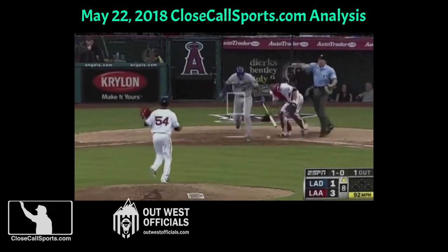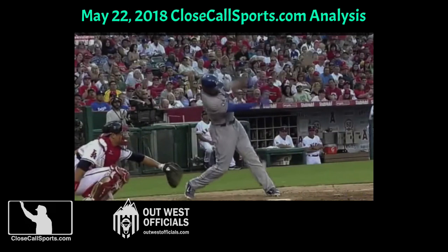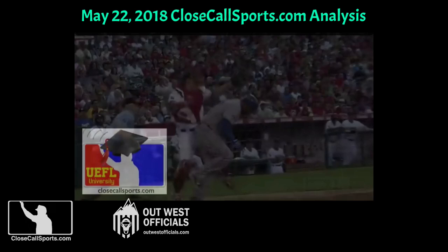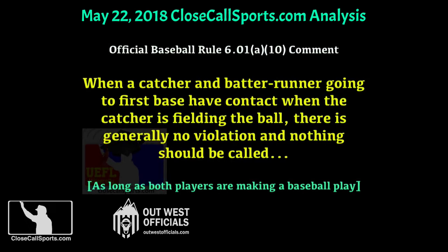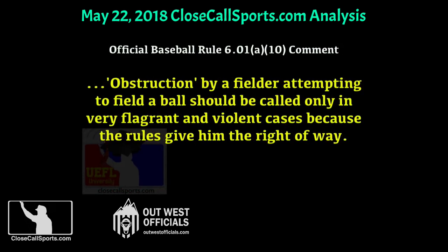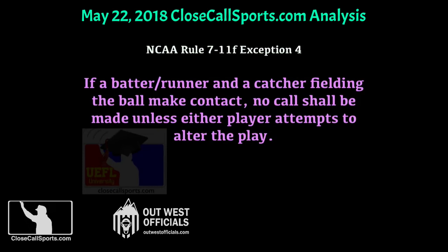He's got interference! Interference is the call on Kemp, and he is called out for interfering. Official Baseball Rule 601A10 comment states that when a catcher and batter going to first base have contact when the catcher is attempting to field the ball, there is generally no violation and nothing should be called. Obstruction by a fielder attempting to field a ball should only be called in very flagrant and violent cases because the rules give him the right of way. The NCAA equivalent is 7-11-F exception 4, with a standard of either player attempting to alter the play, while high school has no explicit rule and must settle for an interpretation.